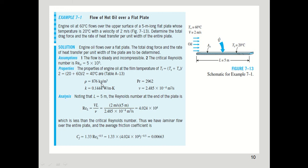At the film temperature of 40°C, the properties of engine oil are: density ρ = 876 kg/m³, Prandtl number Pr = 2962, thermal conductivity k = 0.144 W/m·K, and kinematic viscosity ν = 2.485 × 10⁻⁴ m²/s. The Reynolds number at the full plate length is Re_L = VL/ν = (2 × 5) / (2.485 × 10⁻⁴) = 4.024 × 10⁴. This value is less than the critical Reynolds number 5 × 10⁵, so the flow is laminar over the entire plate.